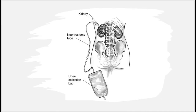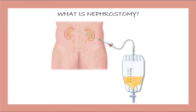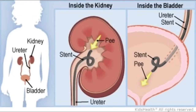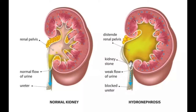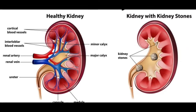Nephrostomy is a procedure where we make an opening between the kidney and the skin, and we then put a tube into the kidney, which is a thin catheter placed into your kidney to drain your urine. Nephrostomy is performed whenever a blockage keeps urine from passing from the kidneys through the ureter and into the urinary bladder.